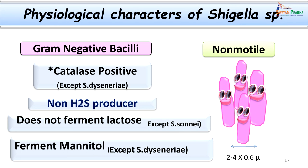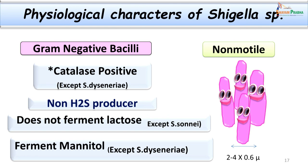It is important to understand the physiological characters of Shigella. They are gram-negative bacilli, non-motile, and non-H2S producing — these three points help differentiate them from their close relative Salmonella species. They are catalase positive, except Shigella dysenteriae. They do not ferment lactose, except Shigella sonnei which is a late lactose fermenter — meaning it can ferment lactose if incubated for more than 48 hours. Mannitol is fermented by most, except Shigella dysenteriae type 1.